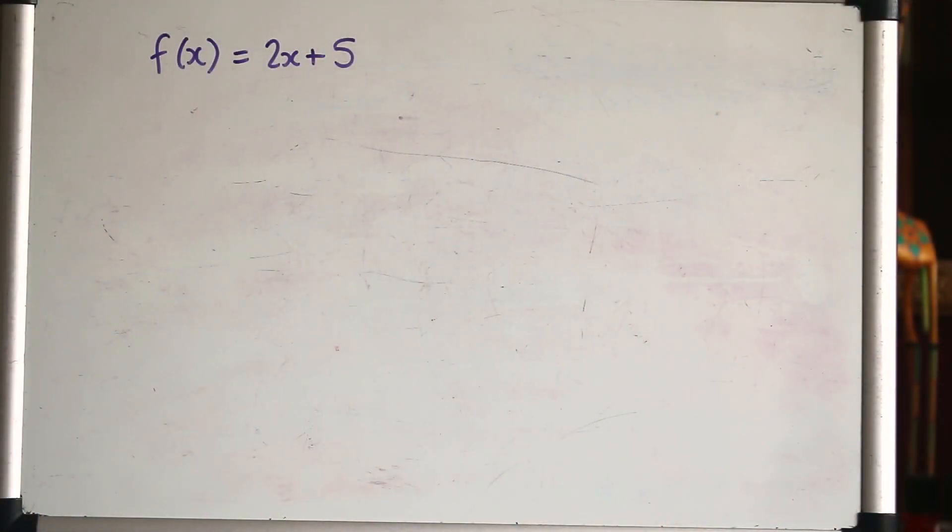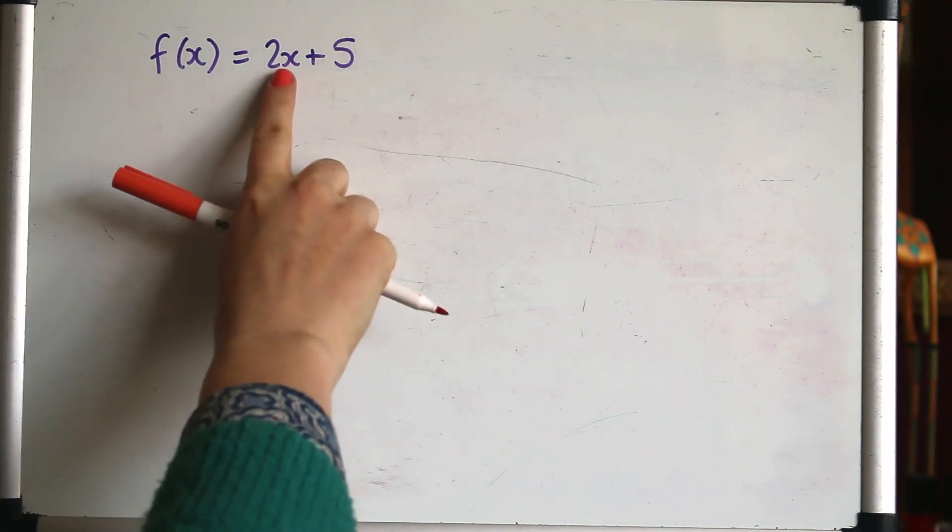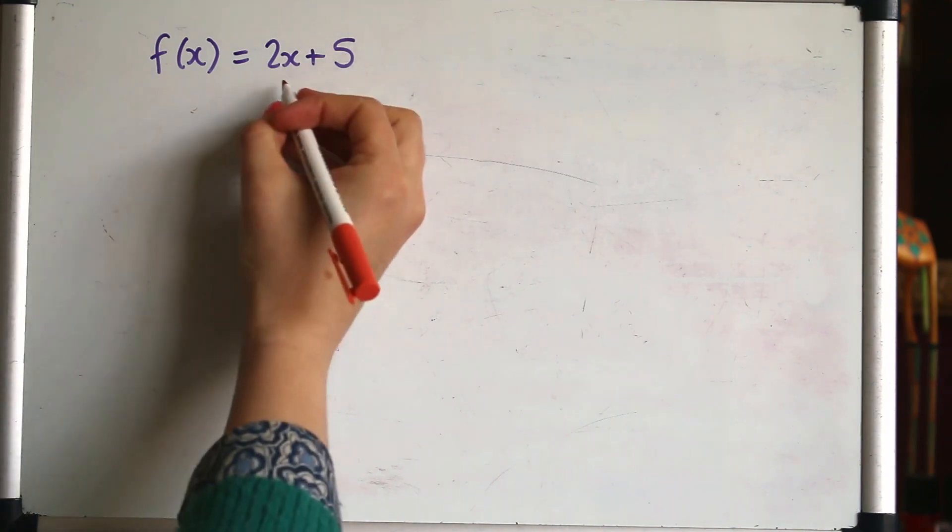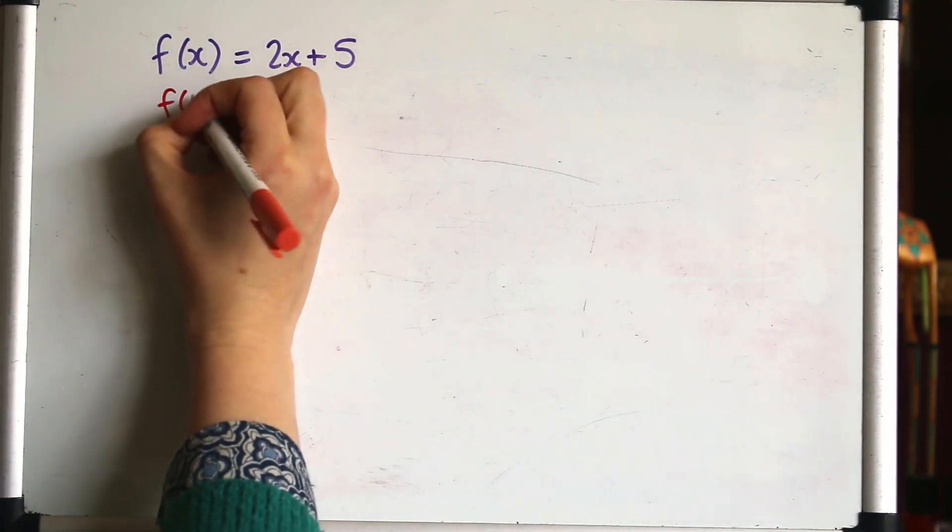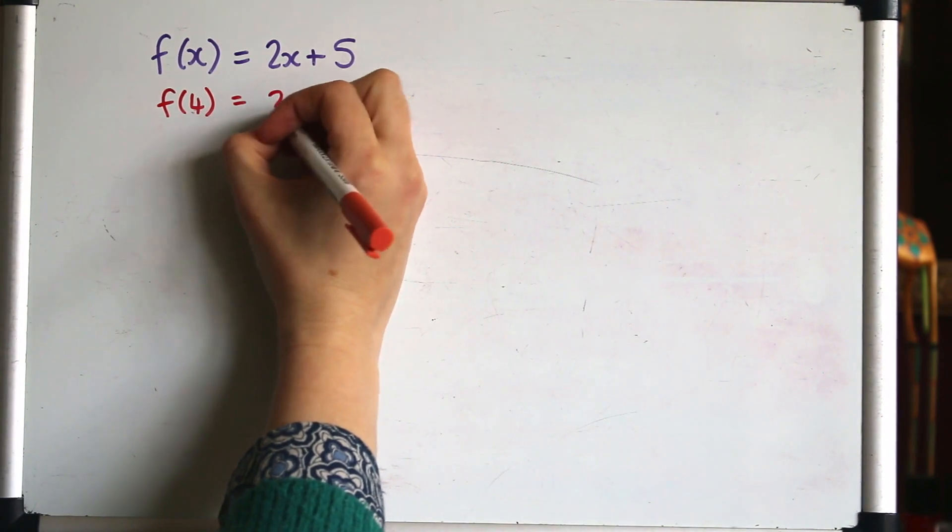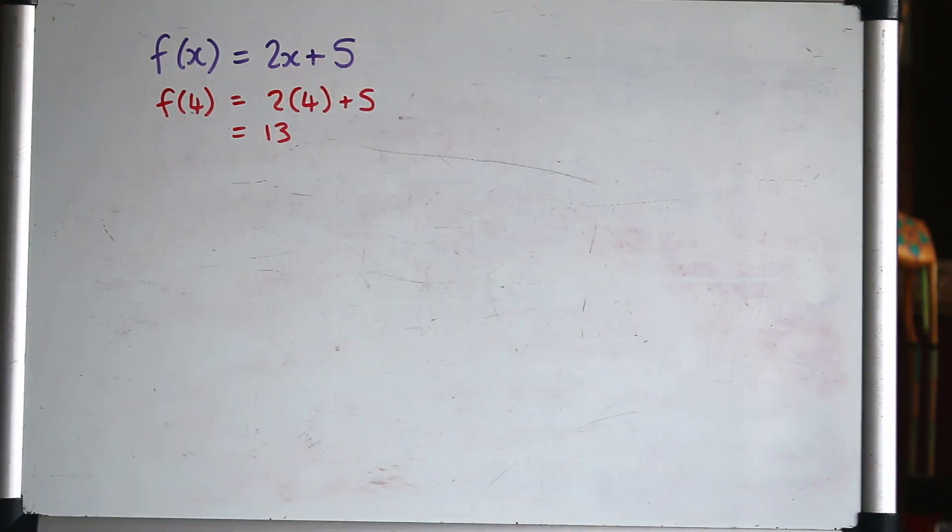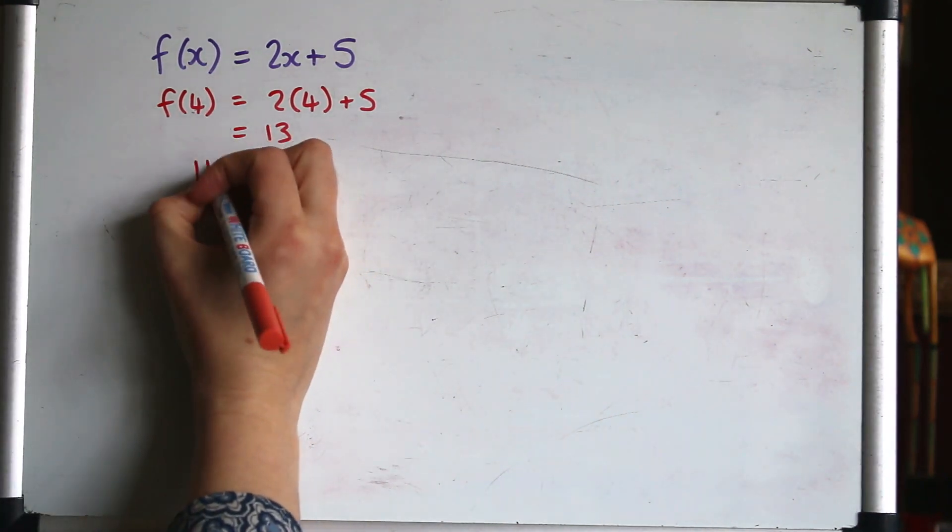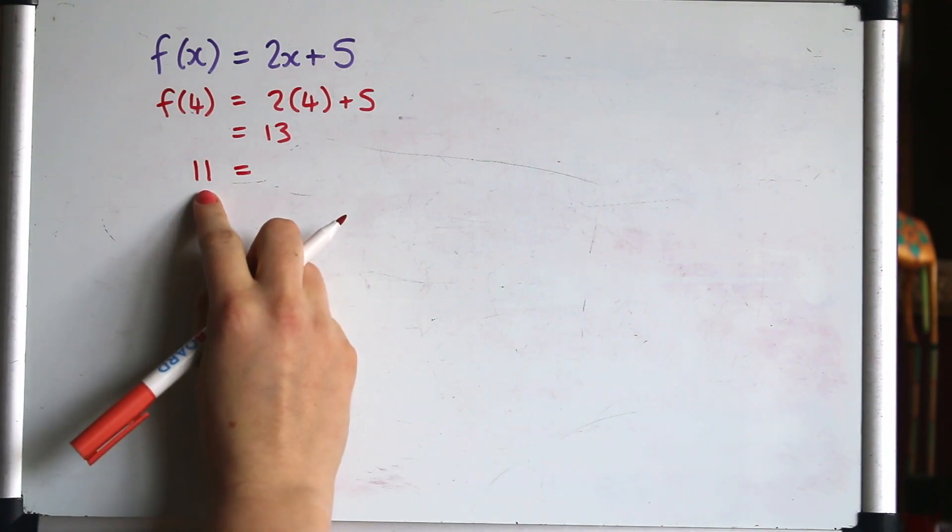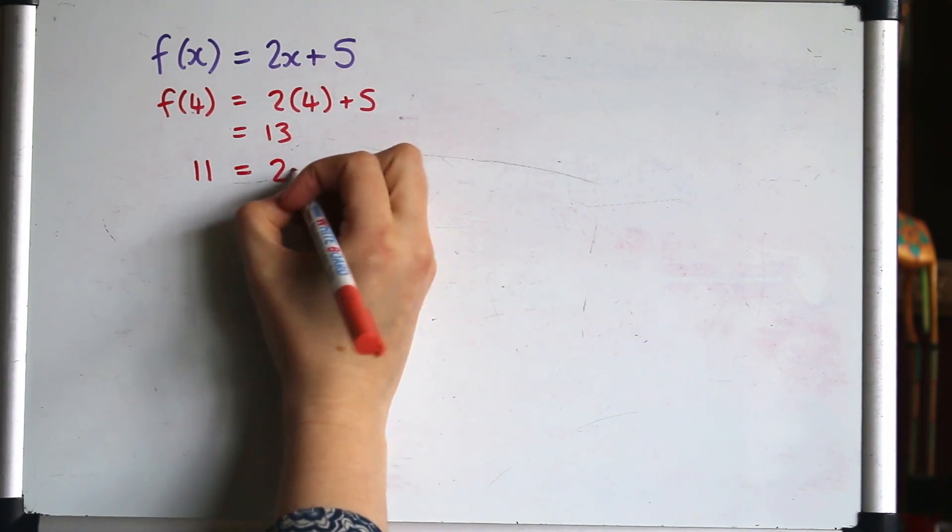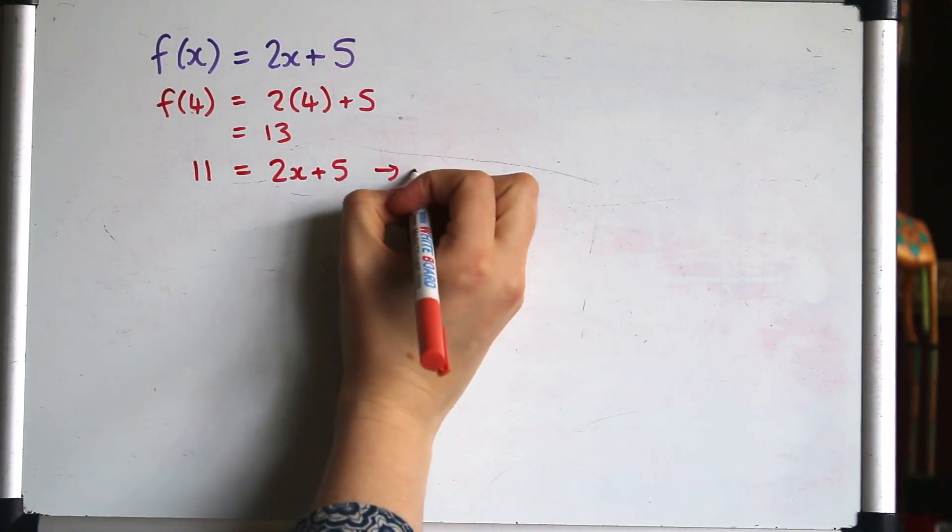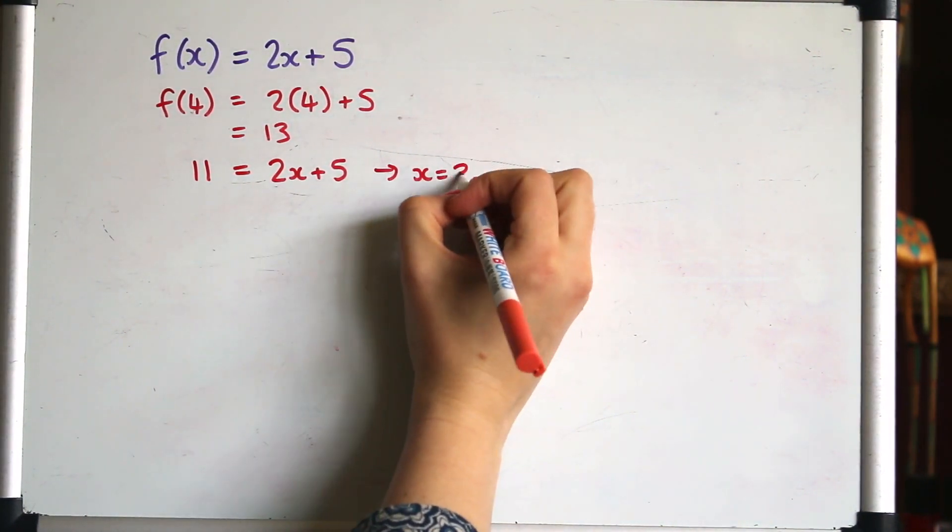We'll begin with a very simple function. A function is just really a rule that takes a bunch of numbers to another bunch of numbers. So the numbers that you input take the place of x. Say you want to input 4 as a number, then you do f of 4, so you're replacing x with 4, so 2 times 4 plus 5. You can also do the opposite and figure out what you started with if your output would have been 11. So setting up that simple equation and solving it, the input would have been 3.